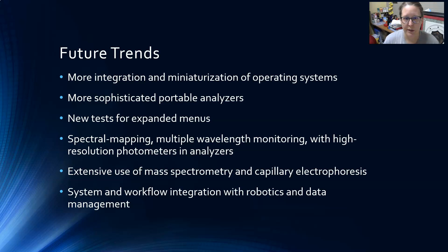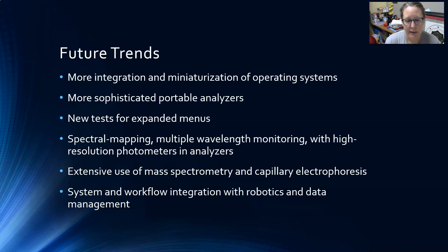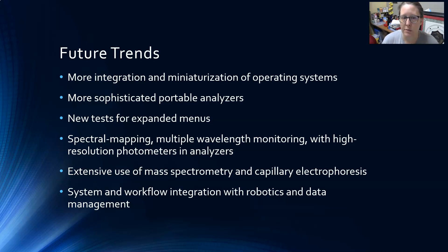Looking at future trends, we'll see more integration and miniaturization of operating systems, more sophisticated portable analyzers, and new tests for expanded menus as researchers identify new biomarkers of disease using artificial intelligence to evaluate diverse markers and their clinical applications. We'll also see more spectral mapping, multiple wavelength monitoring, high-resolution photometers, more extensive use of mass spectrometry and capillary electrophoresis, and greater system and workflow integration with robotics and data management. The next video will cover the steps in automated analysis in clinical chemistry.